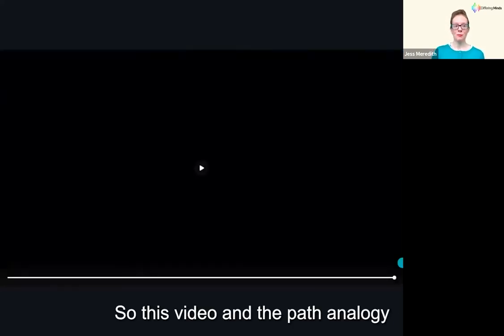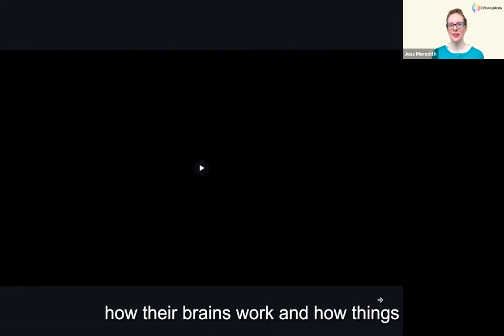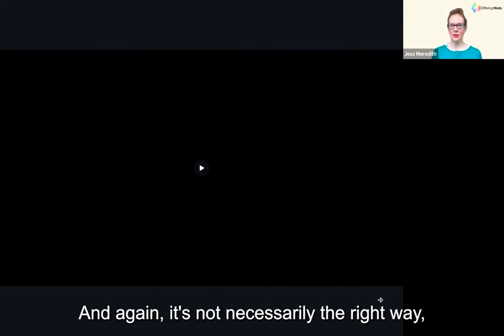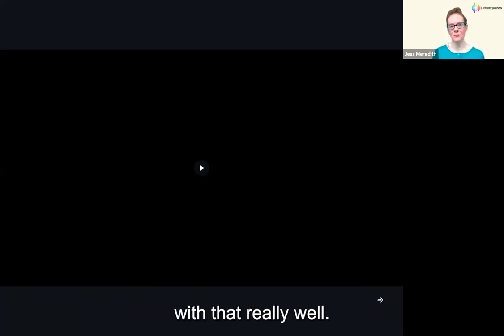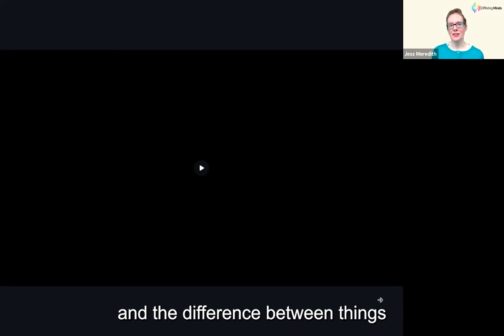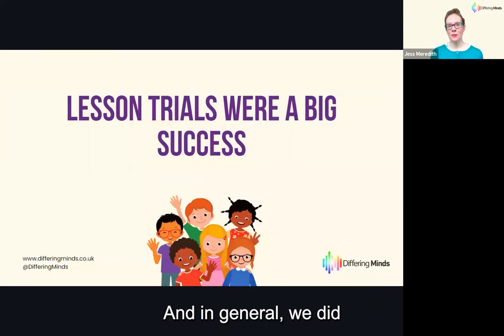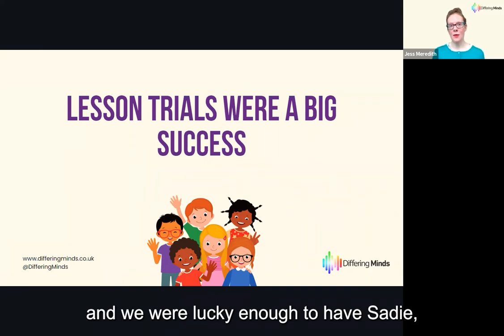This video and the path analogy is a really good way of explaining to children, at a basic level, how their brains work — and how, if you think about paths, it's quite a clear way of demonstrating how things can be different. It's not necessarily the wrong route — just a different path. The children tended to resonate with that really well. These are just some examples of how we cover the themes of celebrating difference and the difference between fairness and equality. We did a few trials in schools in Brighton and Hove, which went really well.